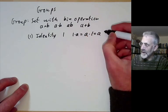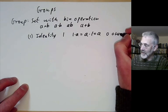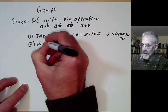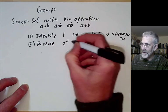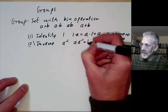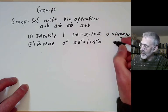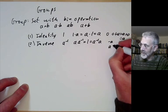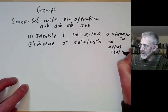Or if you're writing it additively, you would write this as 0 and have 0 plus a equals a plus 0 equals a. Secondly, it has inverses. This means it has an inverse a to the minus 1 such that a to the minus 1 times a equals 1, which equals a times a to the minus 1. Or if written additively, the inverse is minus a, so a plus minus a equals minus a plus a equals 0.